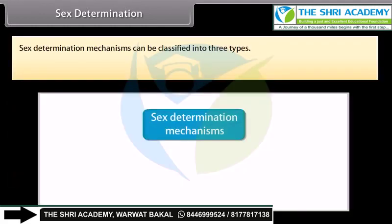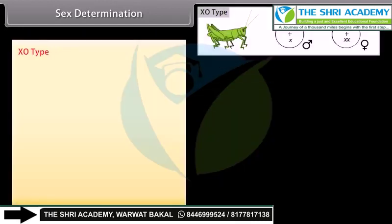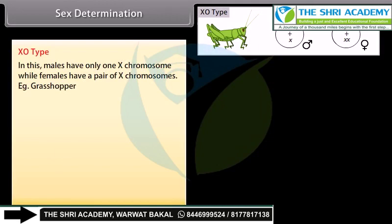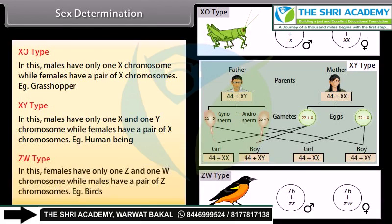Sex determination mechanisms can be classified into three types: XO type, XY type, and ZW type. In XO type, males have only one X chromosome while females have a pair of X chromosomes — example, human beings. In ZW type, females have one Z and one W chromosome while males have a pair of Z chromosomes — example, birds.